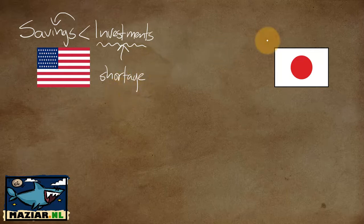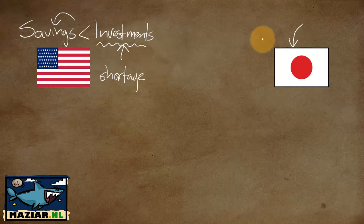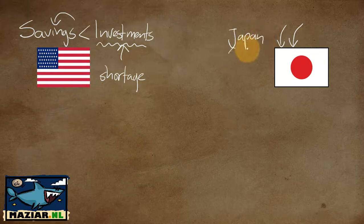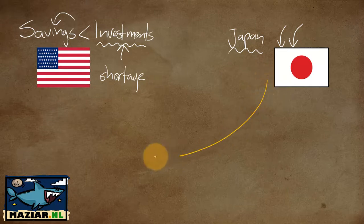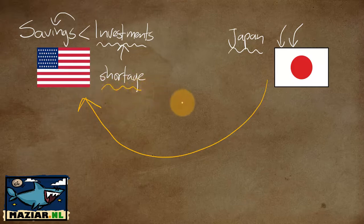That shortage of capital won't come falling from the sky — it has to come from somewhere. It could come from abroad, especially if you have an attractive interest rate that draws foreign investors. For example, it could come from Japan, though it doesn't have to — that's just an example. Suppose Japanese investors decide to fund that shortage of capital in the U.S.